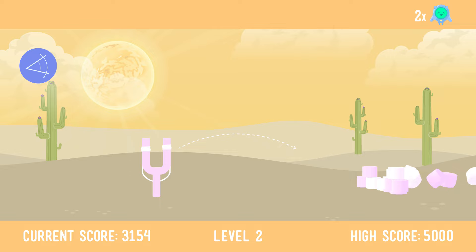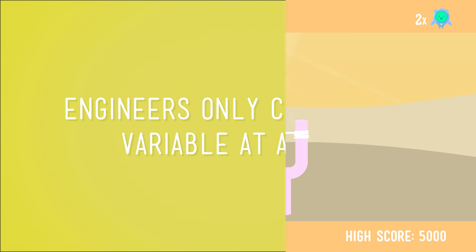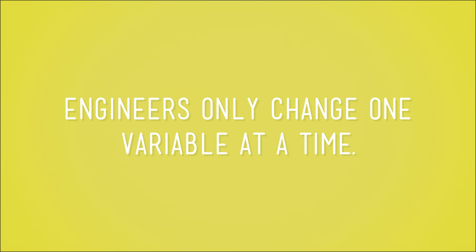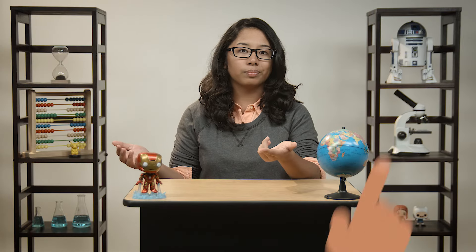Total knockdown! Now, if I wanted to, for my second try, I could have decided to change how hard I pulled on the slingshot. But if I did that, I'd have to keep the angle the same. Bottom line: engineers only change one variable at a time. Otherwise, we can't tell why a solution works or doesn't work.